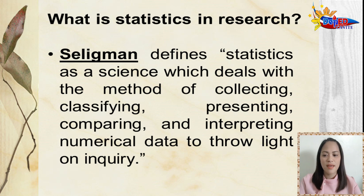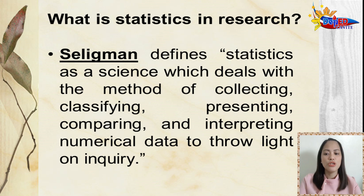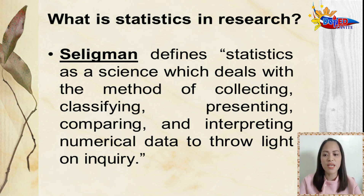What is statistics in research? Statistics has been defined by different authors, and each author has assigned new limits to the field which should be included in the scope of statistics. Seligman defines statistics as a science which deals with the method of collecting, classifying, presenting, comparing, and interpreting numerical data to throw light on inquiry.